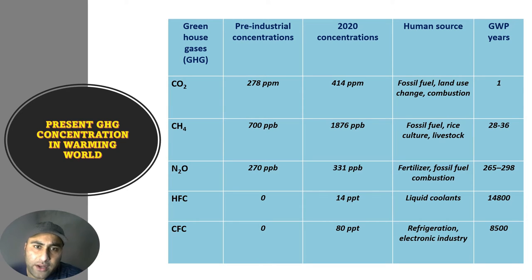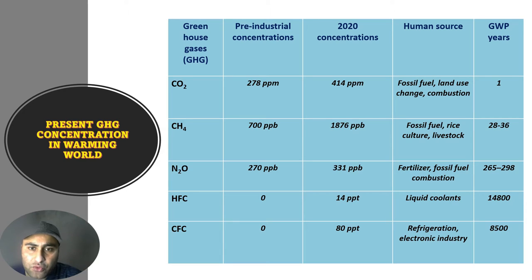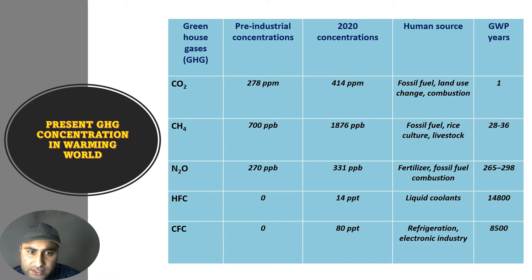Looking at statistics, the concentration of greenhouse gases like carbon dioxide, methane, nitrous oxide, hydrofluorocarbons, and chlorofluorocarbons has changed significantly. There has been an alarming increase in CO2 from 278 parts per million in the pre-industrial era up to 414 parts per million currently. CO2 is majorly emitted by fossil fuel burning, land use change, and combustion. Chlorofluorocarbons have the highest global warming potential at 8600, though their concentration is very low compared to CO2.